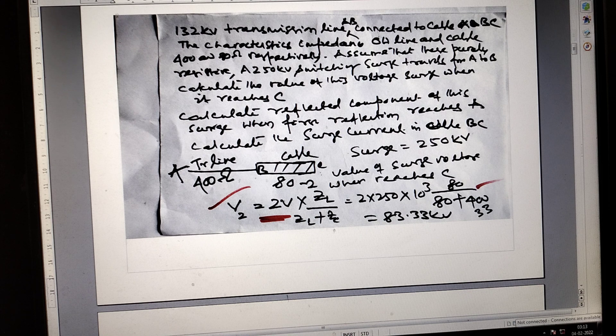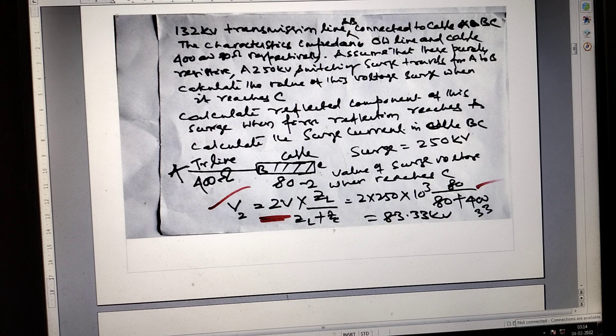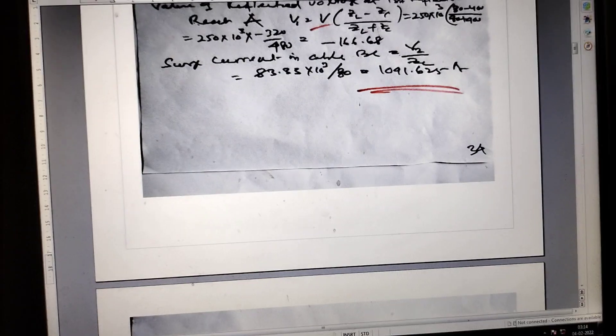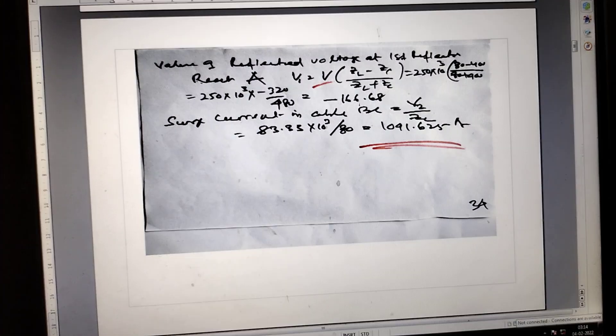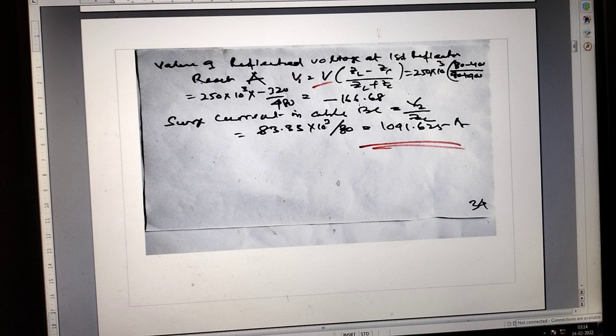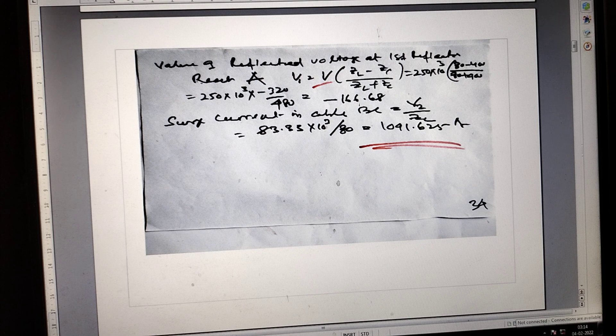The value of reflective voltage V is V times ZL minus ZC divided by ZL plus ZC. Source current is 141.6 at angle 5 degrees.